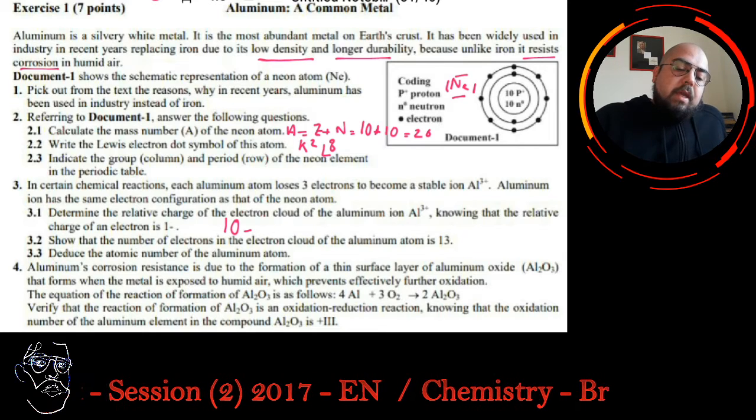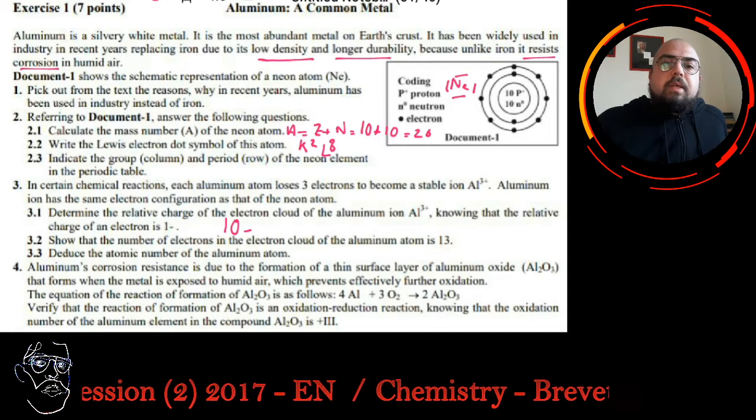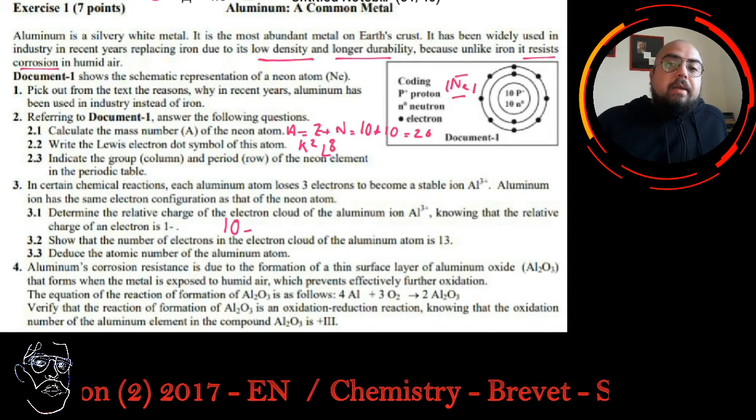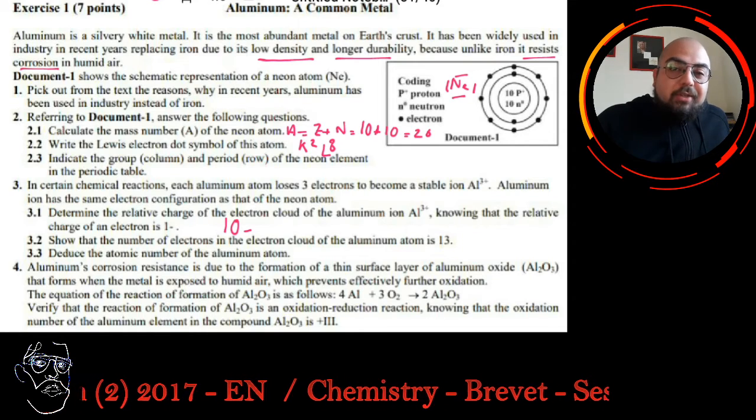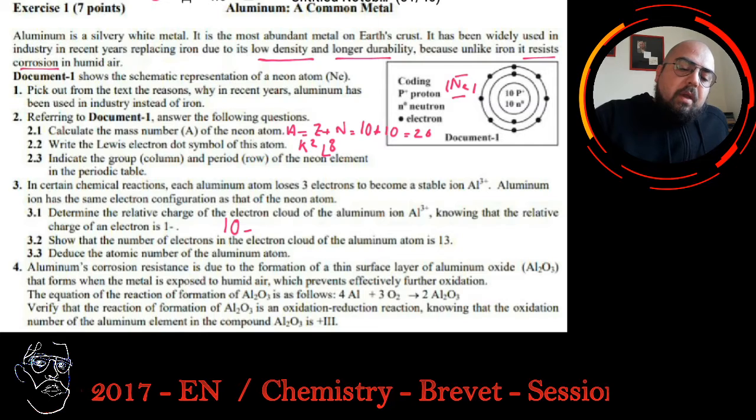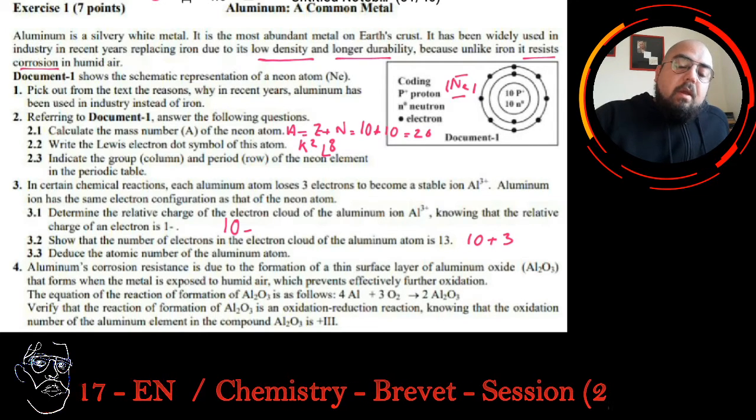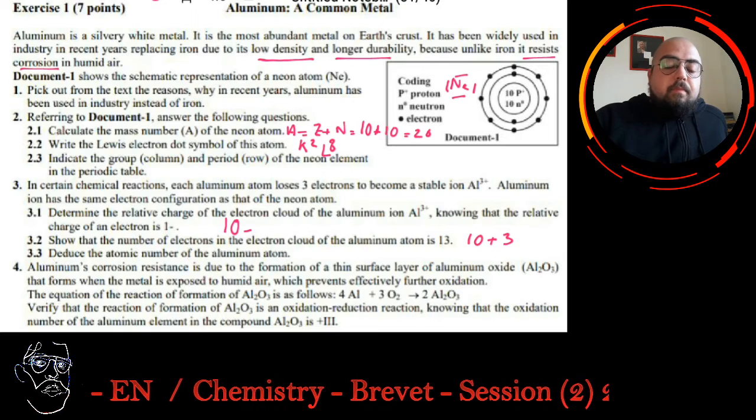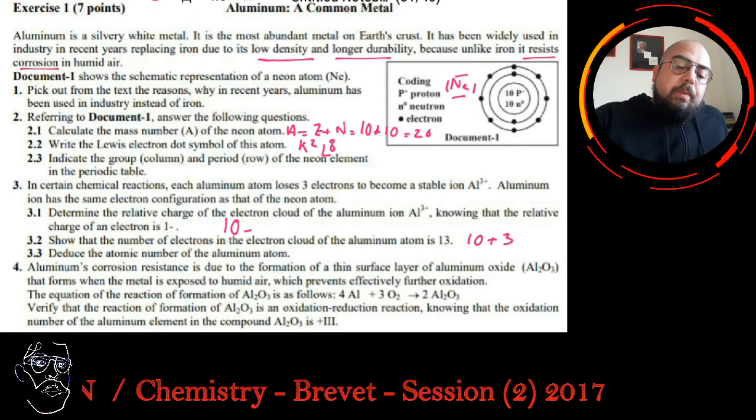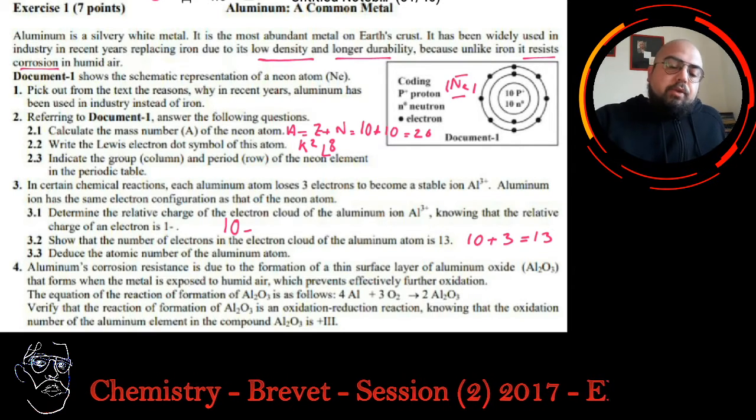Show that the number of electrons in the electron cloud of the aluminum atom is 13. We have in the ion, 10 electrons. And the ion has already lost 3 electrons to become this ion. Initially it has 3 more electrons than the ion. So it will be 10 plus 3, 13 electrons for the atom.